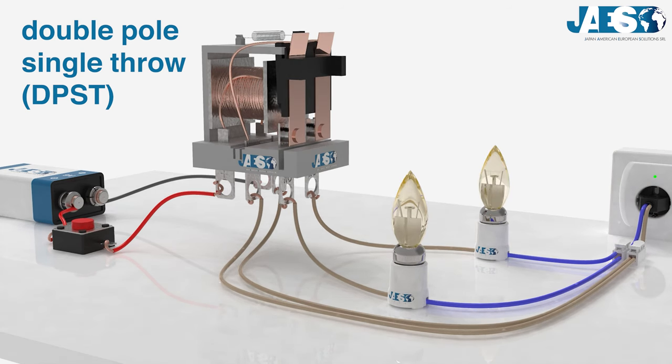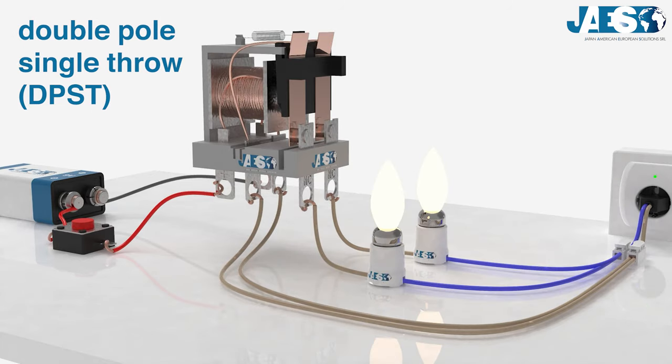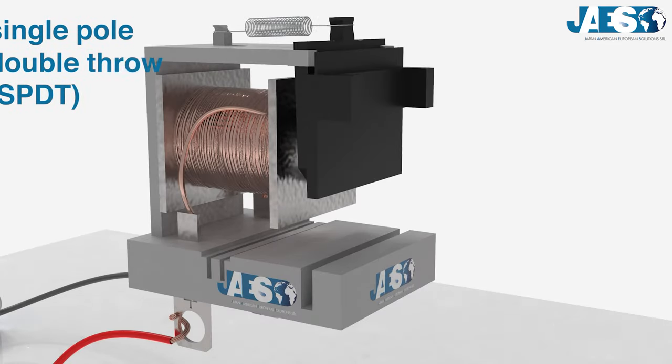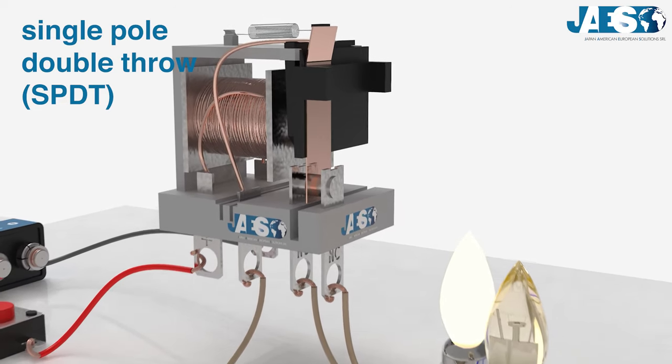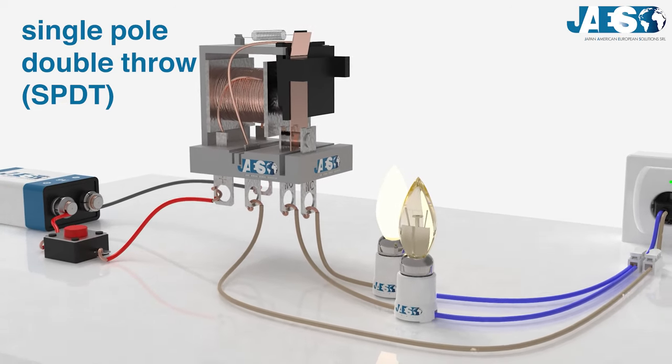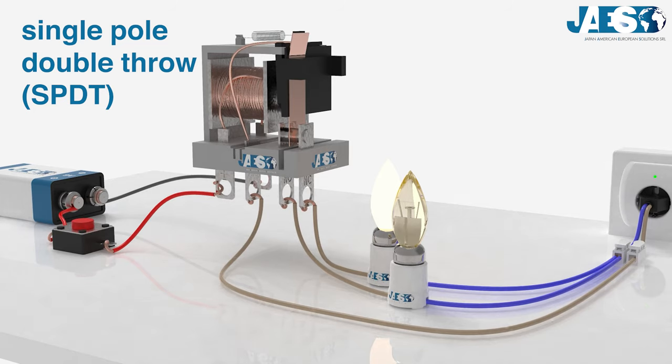The Single-Pole Double-Throw works as a simple multi-way switch. It has a movable contactor in the common with two fixed contacts, which can be connected to either one or the other.